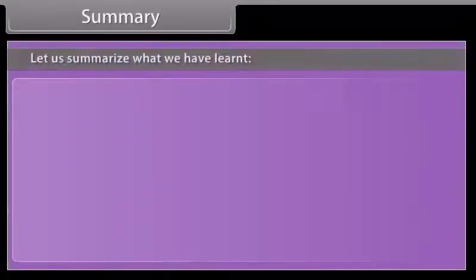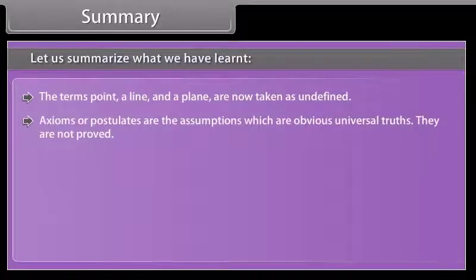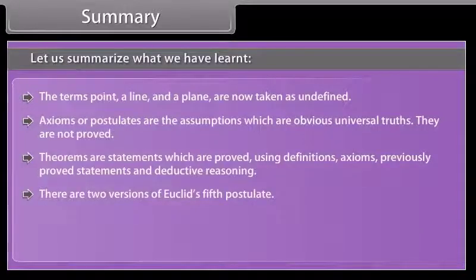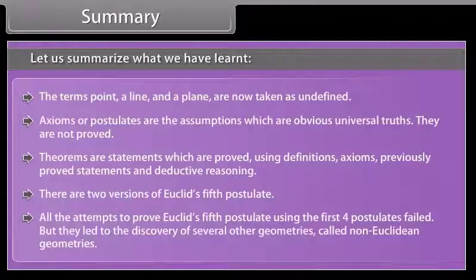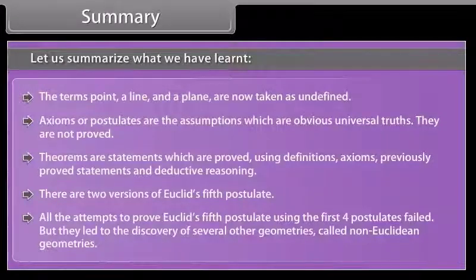Summary. Let us summarize what we have learned. The terms point, a line, and a plane are now taken as undefined. Axioms or postulates are the assumptions which are obvious universal truths. They are not proved. Theorems are statements which are proved using definitions, axioms, previously proved statements, and deductive reasoning. There are two versions of Euclid's fifth postulate. All the attempts to prove Euclid's fifth postulate using the first four postulates failed, but they led to the discovery of several other geometries called non-Euclidean geometry.